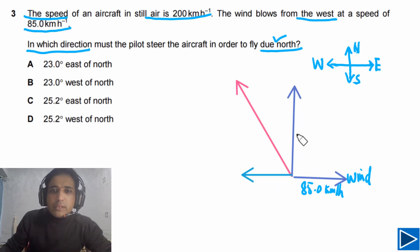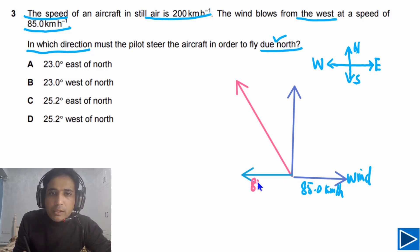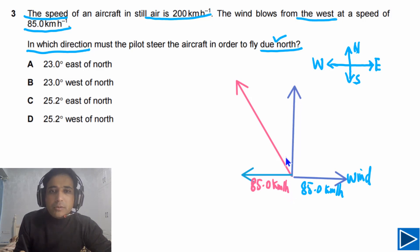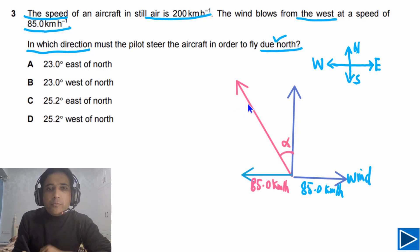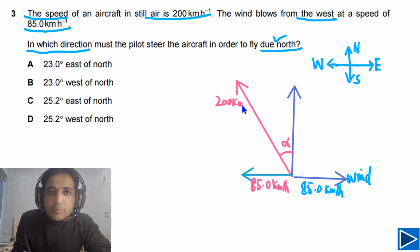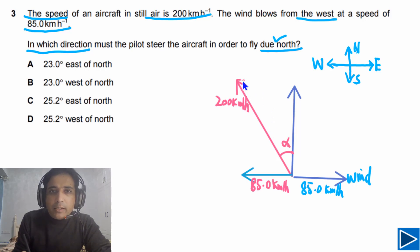From here, we can say that this component of aircraft velocity also has to be 85 kilometers per hour so it will be balanced, and our aircraft will go along the due north direction. The question asks us to calculate this angle, alpha. The speed of aircraft is 200 kilometers per hour. If we complete this triangle, you can see this component is 200 sine of alpha.